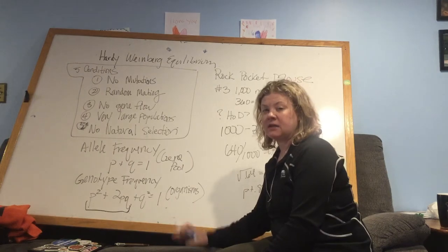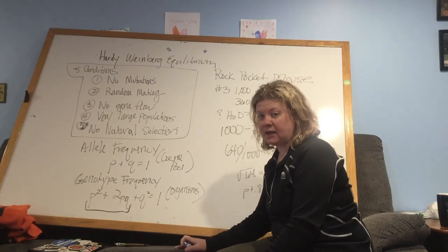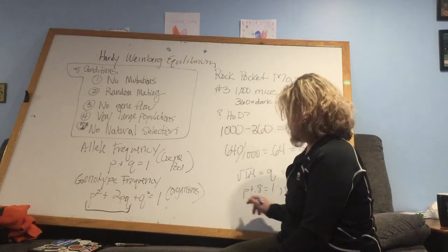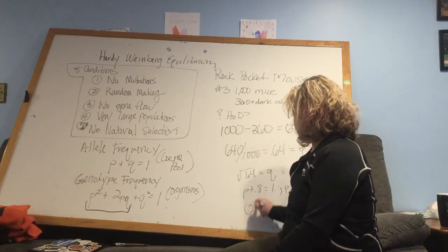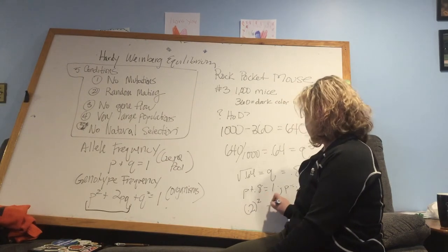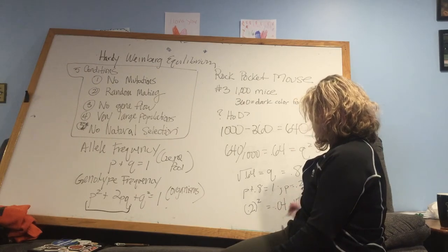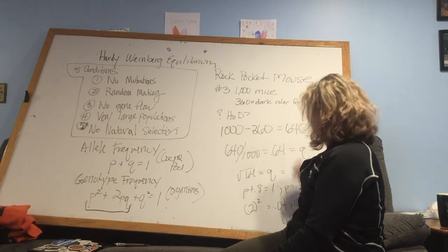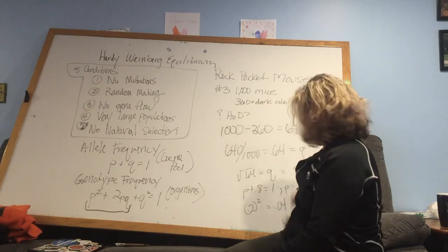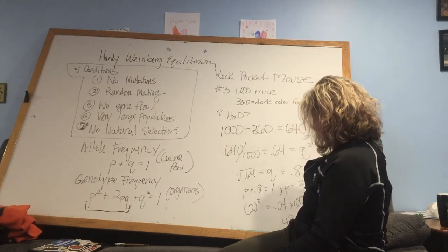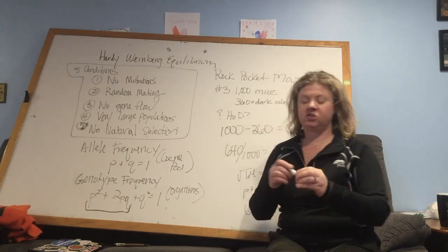If I want to know how many individuals then are displaying that homozygous dominant phenotype, 0.2 squared would be my P squared. There's going to be 0.04 of the population. So times 1,000, 40 individuals of the 360 are going to have that homozygous dominant phenotype.